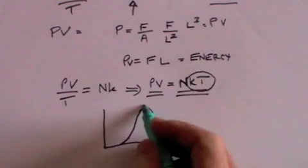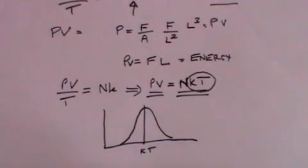But the average energy will be, per atom, will be KT. So on average we can say that the energy of each atom is KT.